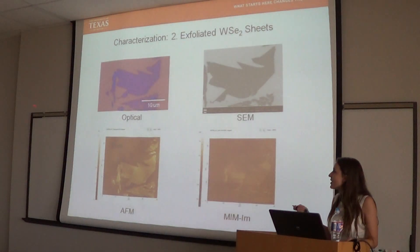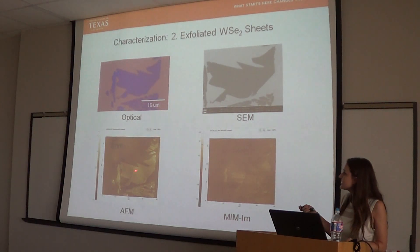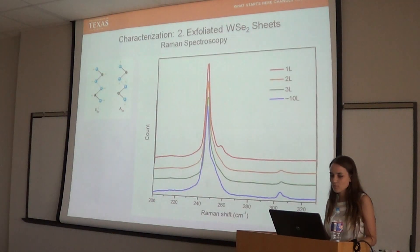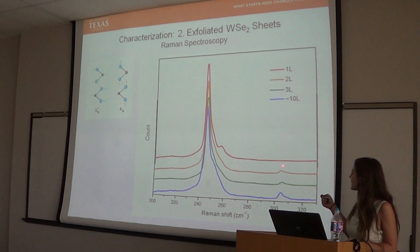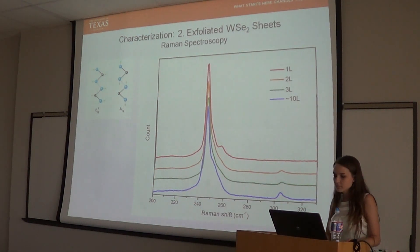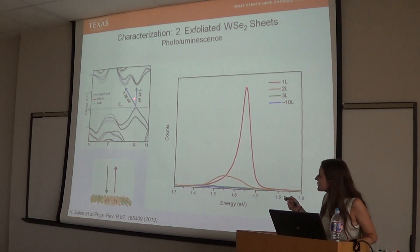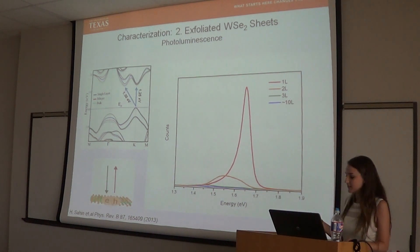Same goes for WSe2. We have our optical image and AFM — this ended up being a bilayer because it has two nanometers in vertical thickness, and you can see it's a little bit darker than the last monolayer image. SEM looks great and smooth. MIM is still not very bright because it's still a very thin flake. Under the Raman spectrum we have our A1G and E2G peaks. The photoluminescence test shows the monolayer has the direct band gap at 1.67 eV, and the direct band gap is 1.25 eV plus the binding energy that leads to that energy level.